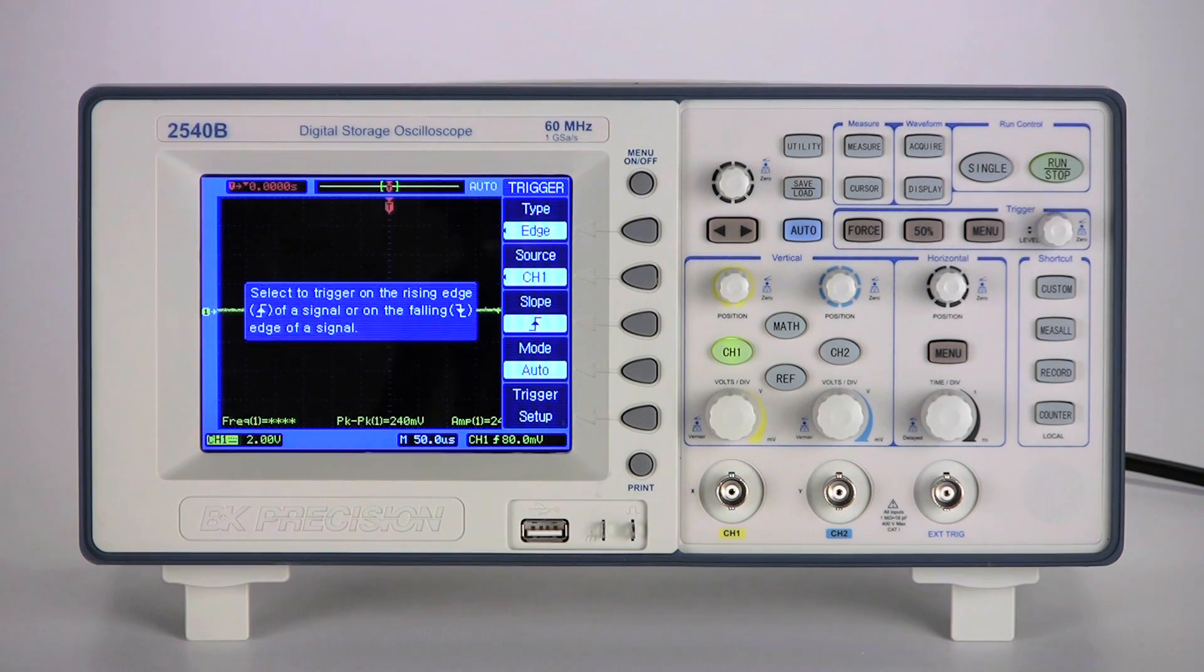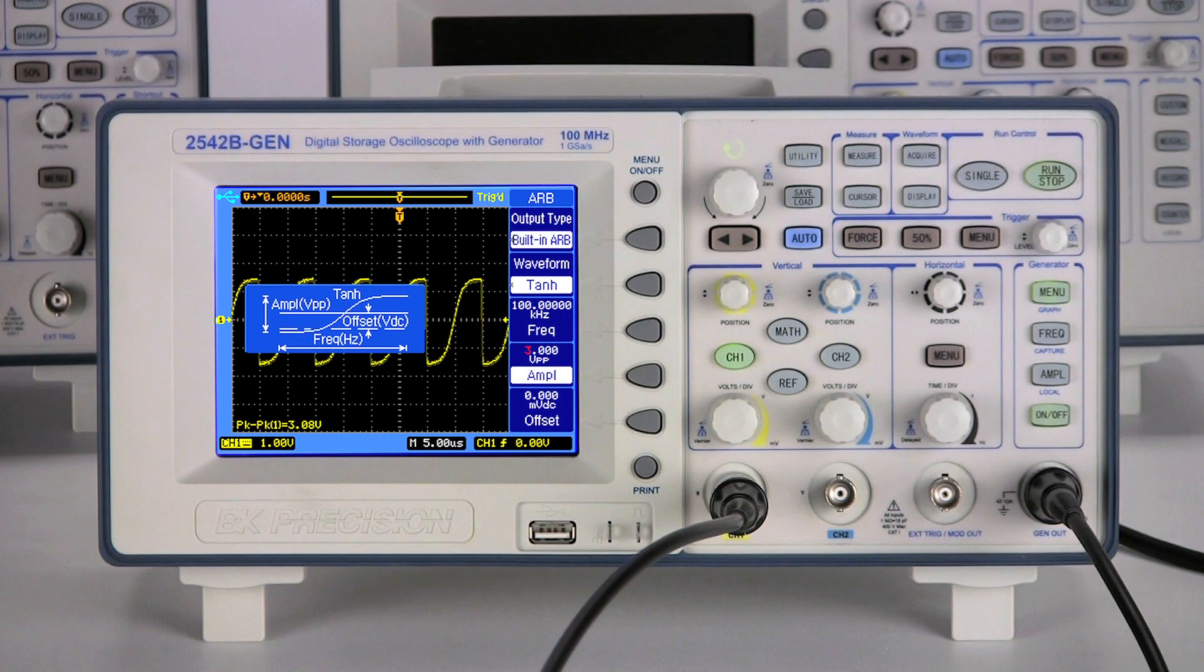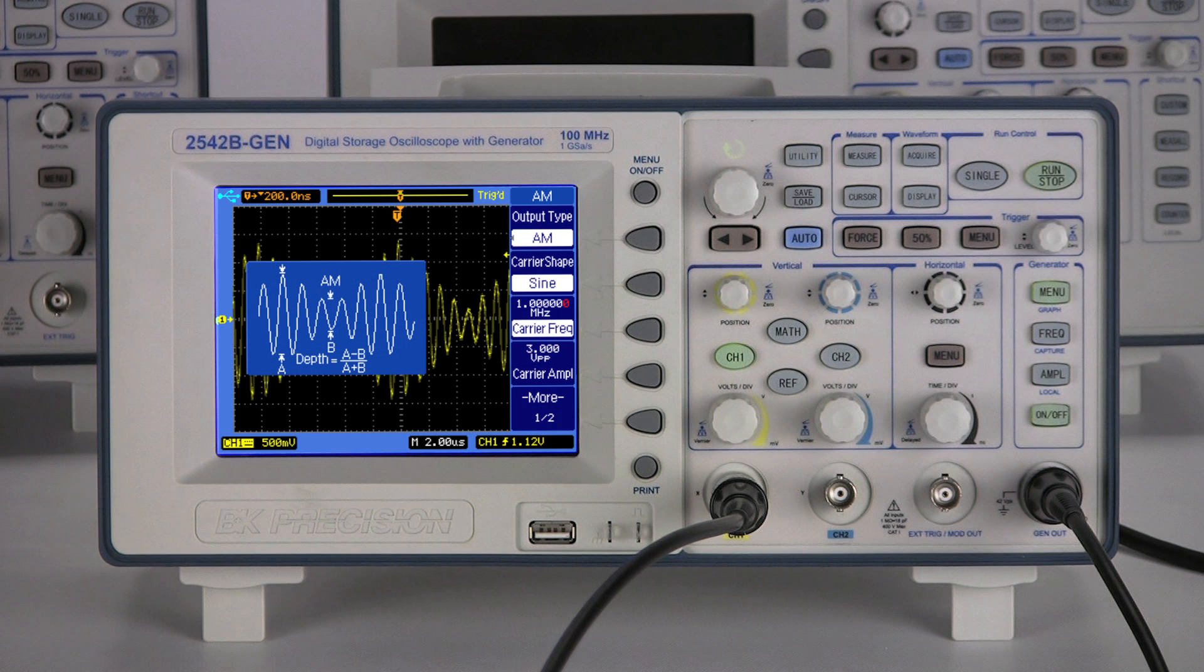All models provide context-sensitive, on-screen help, while Dash-Gen models include additional illustrations to explain the parameters of the built-in arbitrary waveforms and modulation schemes.